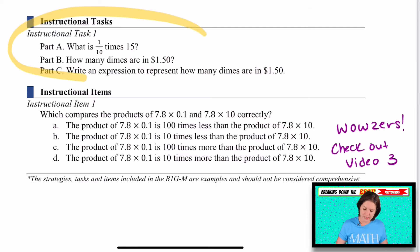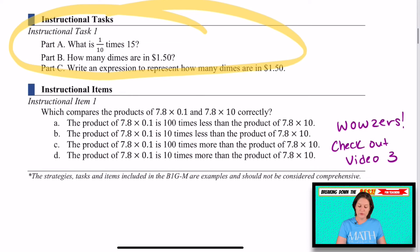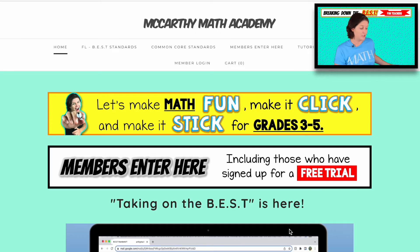All right. I like here, this instructional task that they've provided as an example, it does include money, which is helpful for that money standard. I believe it was M.2.1. And then here, I was like, whoa, wowzers. Because they're having the expression, the product of this, finding the product of this, and then seeing if this is true, if it is 10 times less. So there's a lot of work going into a problem like this, hence the wowzers. And check out video number three. We'll show you, I'll show you that in just a second. But video number three, I wanted to target that head on. So let's go ahead and see what you have access to in your taking on the best membership.